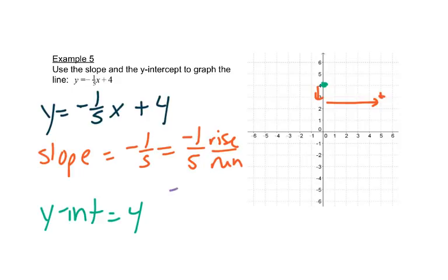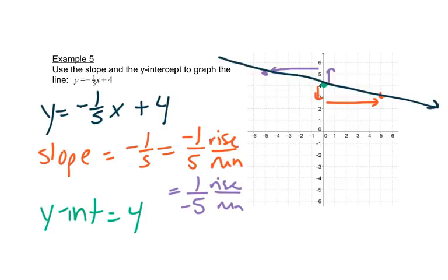Now I could make that negative be on the bottom. I could have this. And that would be up 1 positive rise, left 5 for a negative run. It gives us a nice straight line through those points.